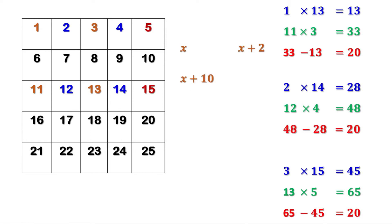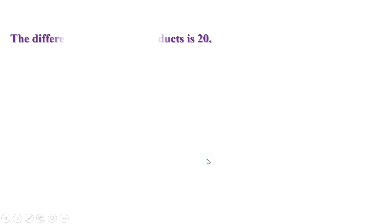Now let us look at the first number and the fourth number. When the first number is 1, the fourth number is 13; 1 plus 12 is 13. When the first number is 2, the fourth number is 14; 2 plus 12 is 14. When the first number is 3, the fourth number is 15; 3 plus 12 is 15. That means the fourth number is 12 more than the first number. So if x is the first number, the fourth number is x plus 12. Therefore, we can take the four numbers at the corners as x, x plus 2, x plus 10, and x plus 12.